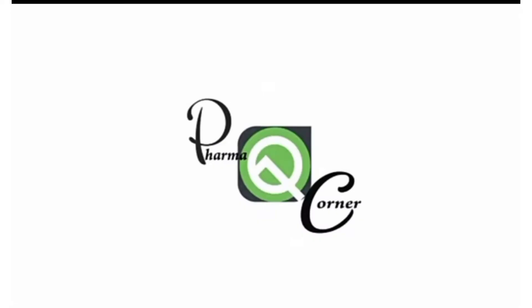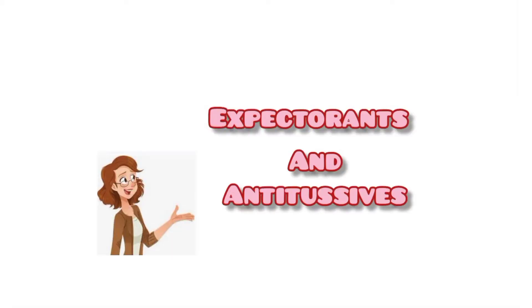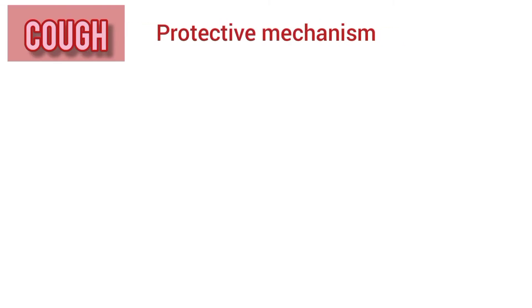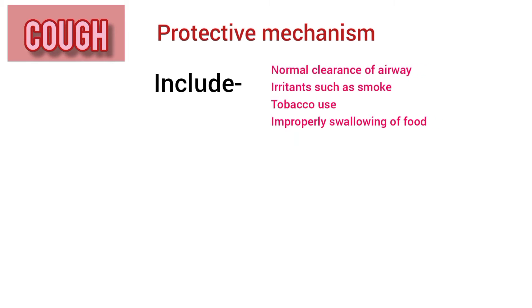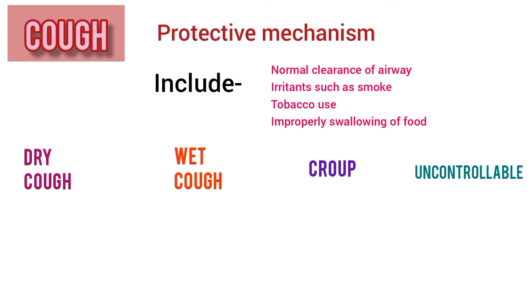Welcome back to Pharmakona. Today we are going to discuss expectorants and antitussives. Cough is a protective mechanism that includes normal clearance of the airway. Cough can be caused by irritants such as smoke, tobacco use, and improper swallowing of food. Types of cough include dry cough, wet cough, croup, and uncontrollable cough.